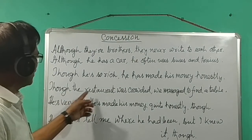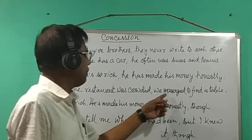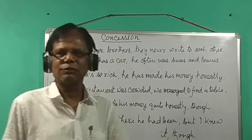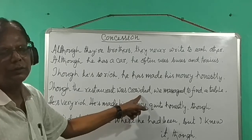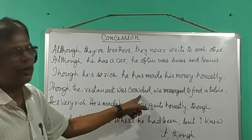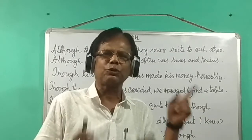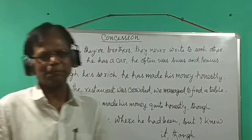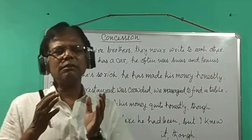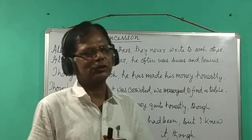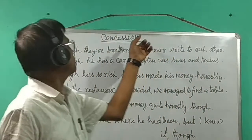Though the restaurant was crowded, we managed to find a table. 'Though the restaurant was crowded' is the subordinate adverbial clause, and 'we managed to find a table' is the principal clause — so it is a complex sentence. In complex sentences we use 'although' and 'though' to express concession.